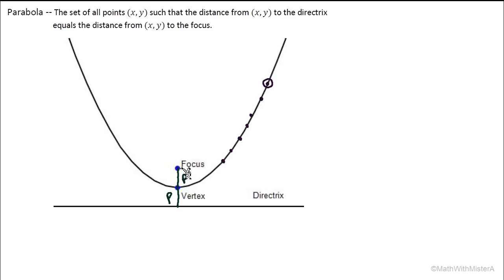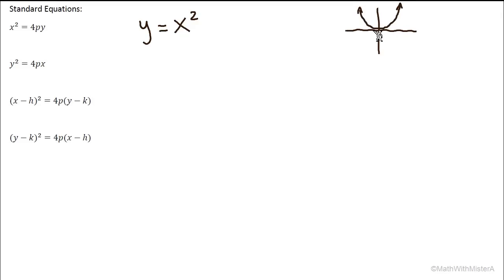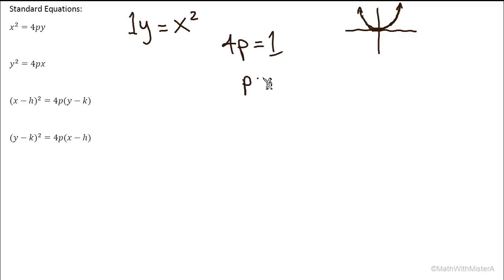Let's look at some standard forms of equations of parabolas. Building off of y equals x squared — a parabola with the vertex at the origin — if we put this into the form x squared equals 4py, we can identify the value P, the distance from the vertex to the focus. Comparing these equations, the coefficient is 1, so 4p equals 1, meaning P equals one-fourth. The distance from the center to the vertex is one-fourth, and the distance down to the directrix is also one-fourth.